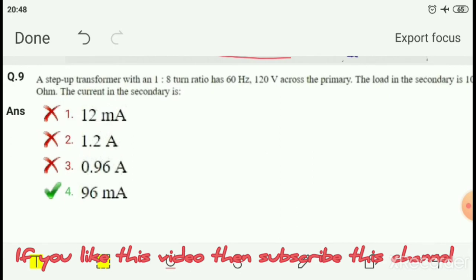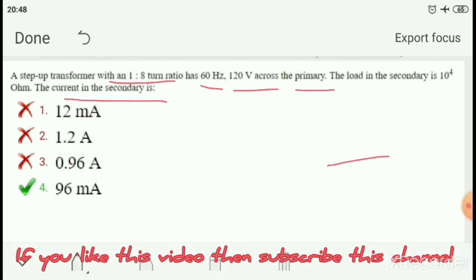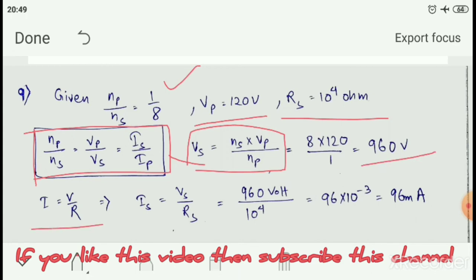Question number 9: A step-up transformer with a 1 is to 8 turn ratio has 60 hertz, 120 volt across the primary. The load in the secondary is 10 to the power 4 ohm. What is the current in secondary? We have the formula Np by Ns equals Vp by Vs equals Is by Ip. Given Np by Ns is 1 to 8, Vp is 120 volt, and Rs is 10 to the power 4 ohm. Using this formula, Vs equals Ns times Vp by Np equals 960 volt. Then Is equals Vs by Rs equals 96 times 10 to the power minus 3, that is 96 milliampere, which is option number 4.